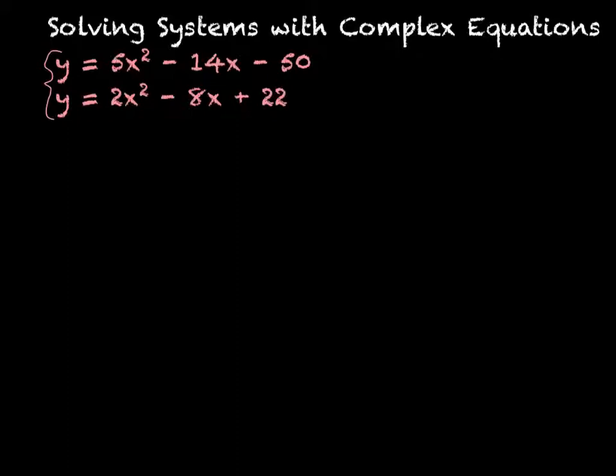So we'd solve it the same way. In this case, we already have things that equal to y. So I'm just going to set the two equations equal to each other. 5x² - 14x - 60 equals 2x² - 8x + 22.